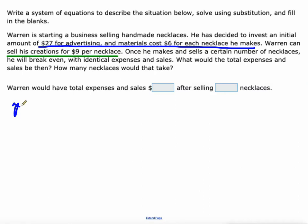So y equals $6 per necklace plus $27. Those are his expenses. And his income is just $9 per necklace. Our equation that we're going to write is 6x plus 27, those are his expenses, and we want to know when will that be equal to his income, 9x.